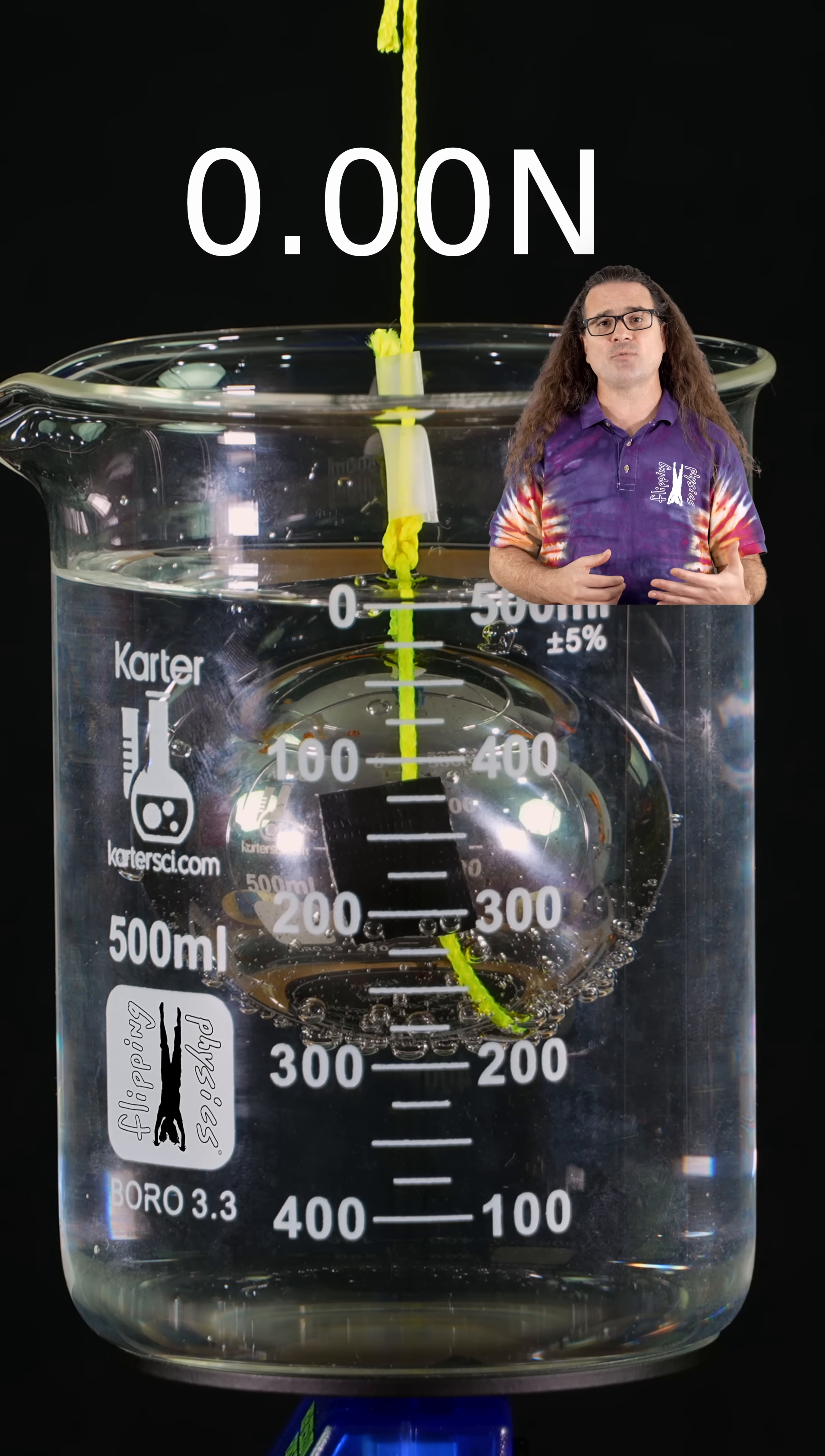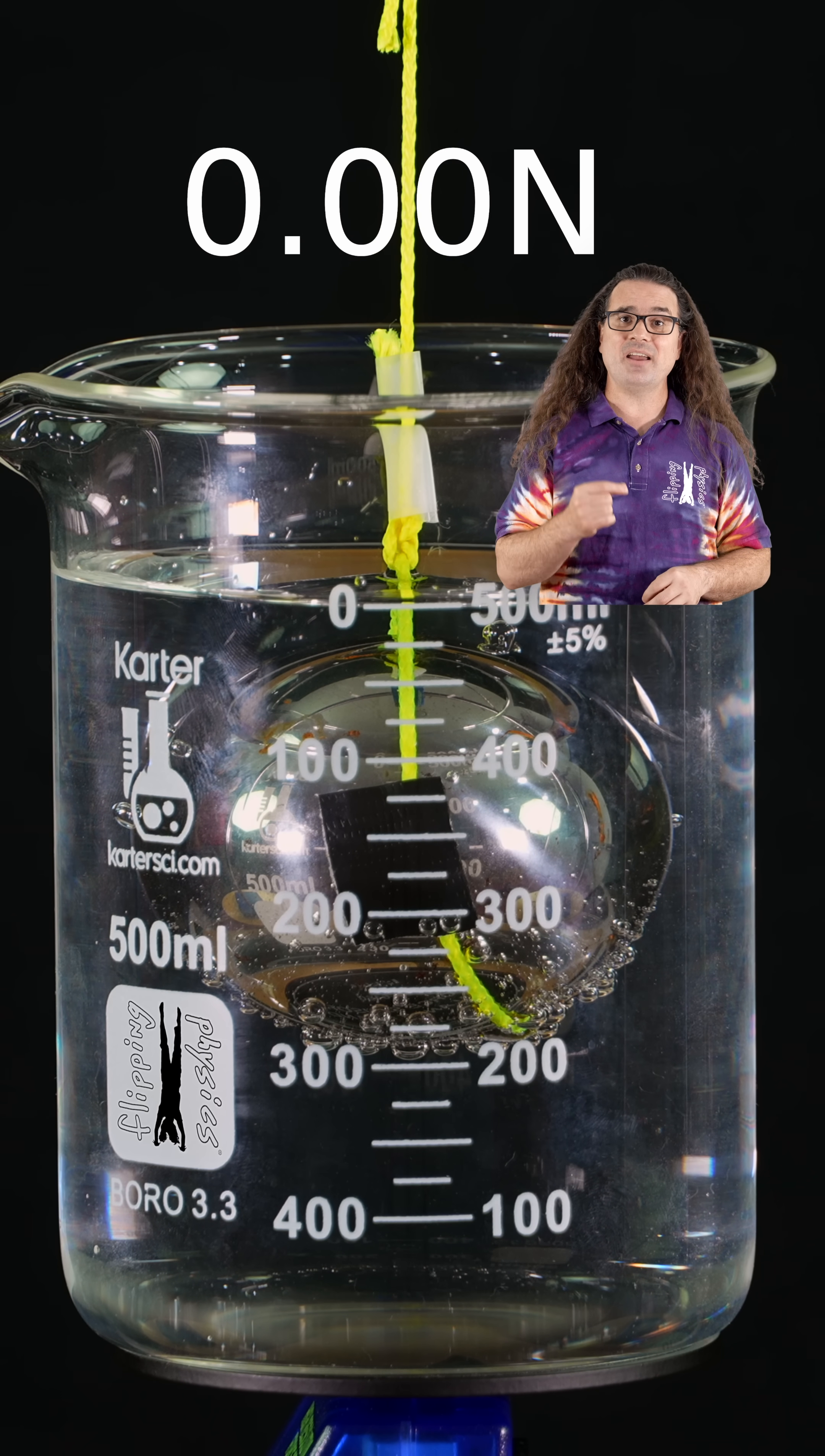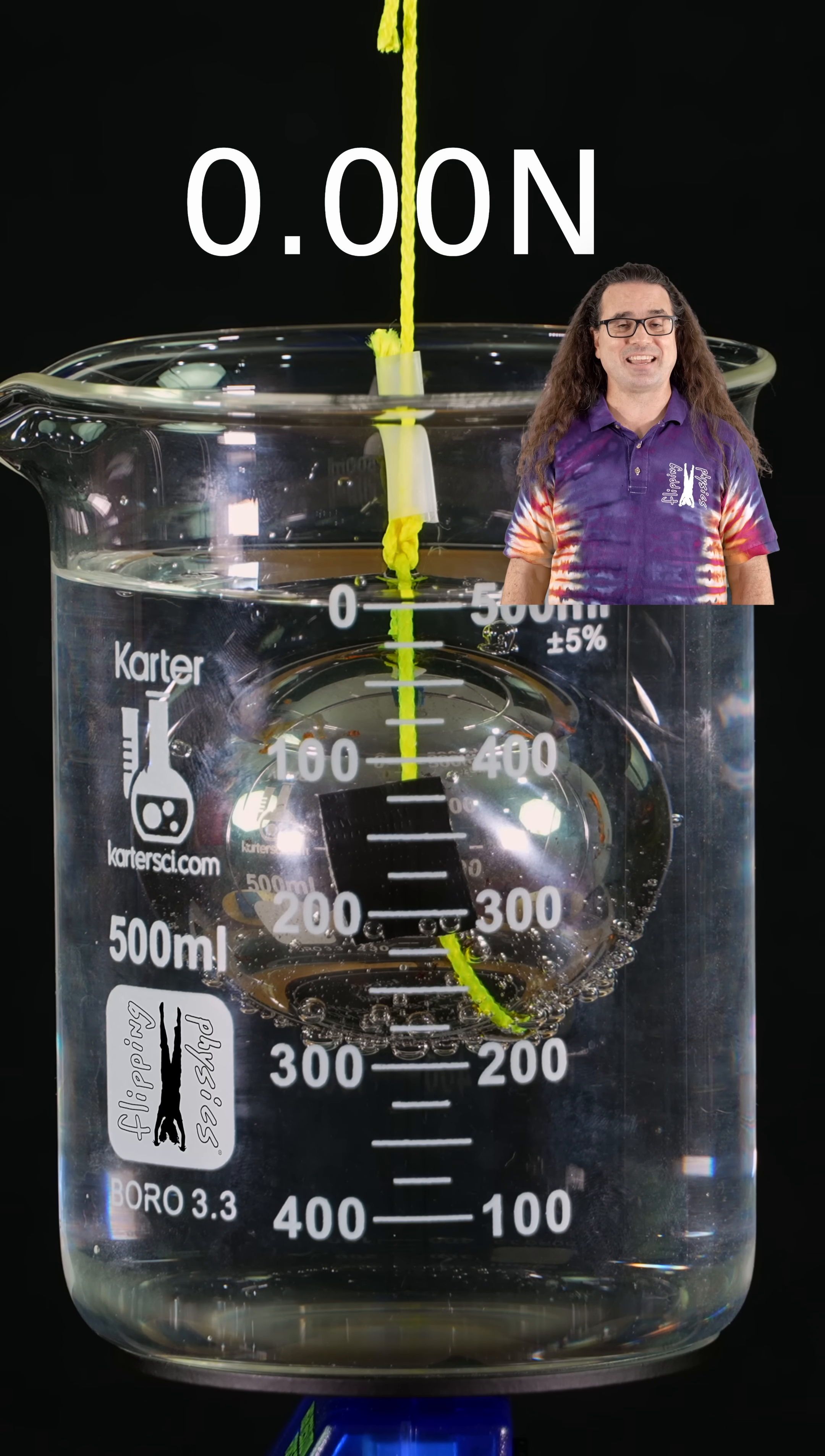the pressure at the bottom of the water only depends on the depth of the water. And because the depth of the water is the same in both instances, the pressure of the water on the bottom of the beaker is the same. And because the area of the bottom of the beaker is the same, the force from the water on the bottom of the beaker is the same, which makes the reading on the scale the same.